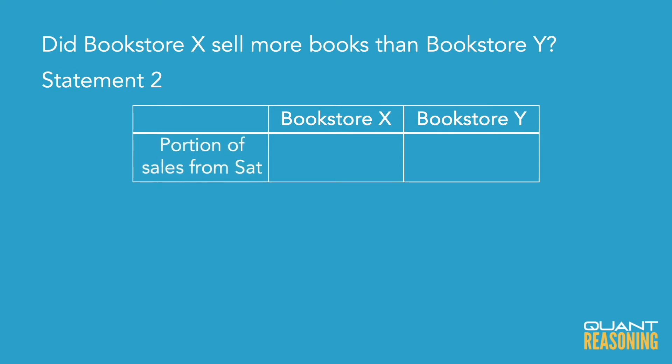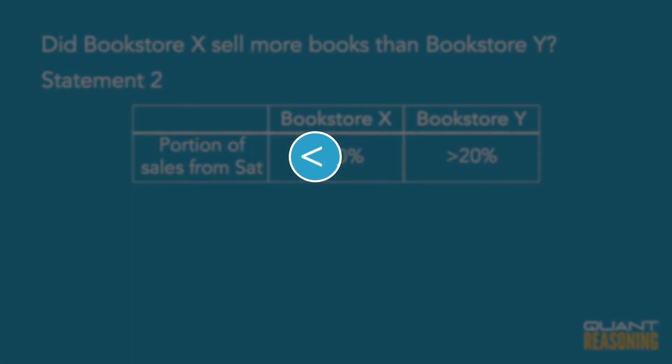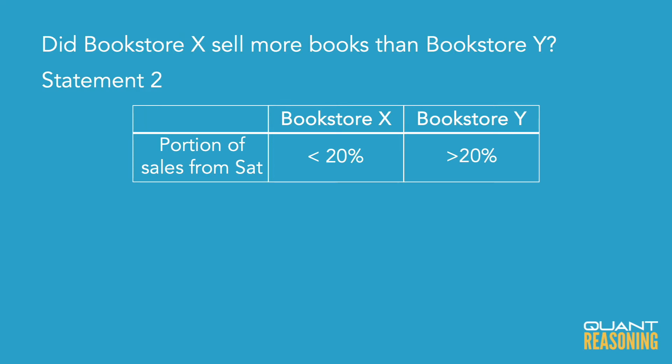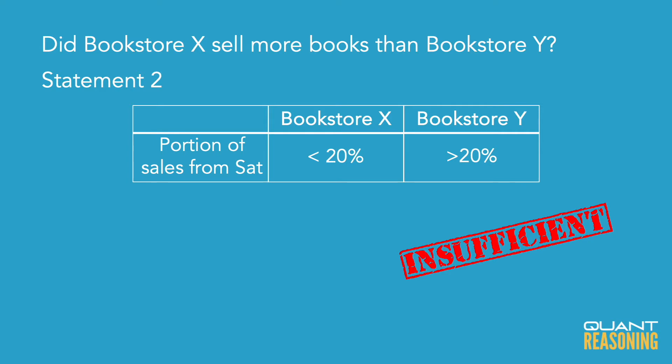Statement two on its own is essentially telling us how big of a deal Saturday was in relation to the rest of the week — was Saturday an important driver for the amount of sales that week or wasn't it? What I'm learning from statement two is that in the case of my store, Store X, Saturday wasn't all that important as a driver of sales last week. But in the other store — the one we're competing against — Saturday was an important driver of sales; it accounted for more than one-fifth of the sales last week. On its own, I don't see how this can answer the question, because how important Saturday was for each store couldn't possibly tell us which store sold more books. So I'm going to eliminate answer choice B.